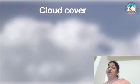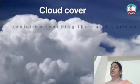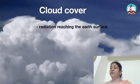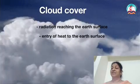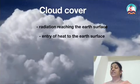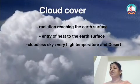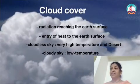The next factor is cloud cover. Cloud cover is the most important condition affecting the amount of radiation reaching the earth's surface. Clouds prevent the entry of heat to the earth's surface, so areas with cloudless sky have very high temperature and are like a desert, while areas under a cloudy sky have lower temperature.